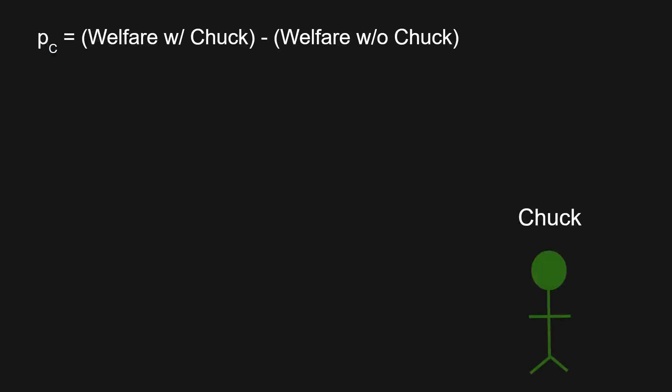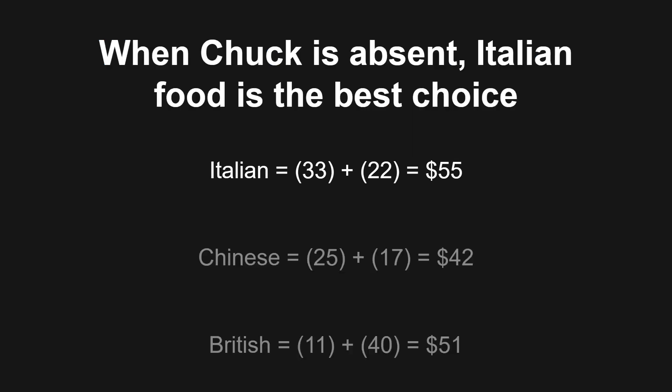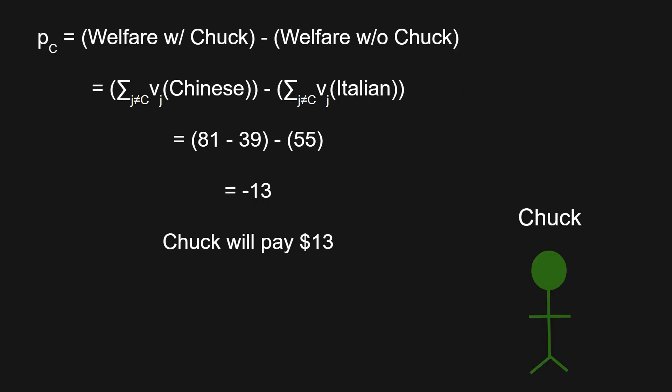Finally, we can calculate Chuck's payment. We sum up each outcome but ignore Chuck's values and find which yields the highest social welfare. Italian food with a social welfare of $55 ends up being the best option when Chuck is absent. We deduct Chuck's personal value for Chinese food of $39 from the total social welfare of $81, then subtract the social welfare for the alternative outcome of Italian food — what we would have selected if Chuck was absent — and we get that Chuck makes a payment of $13 to the mechanism.